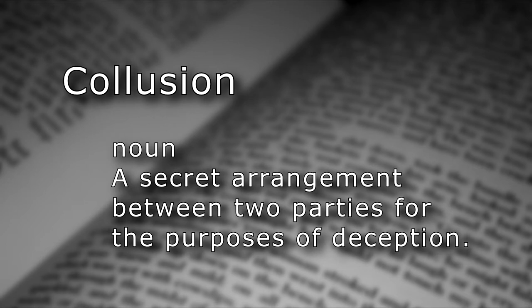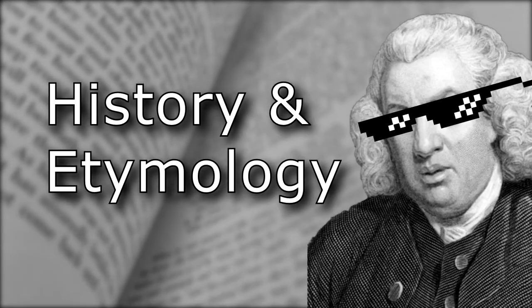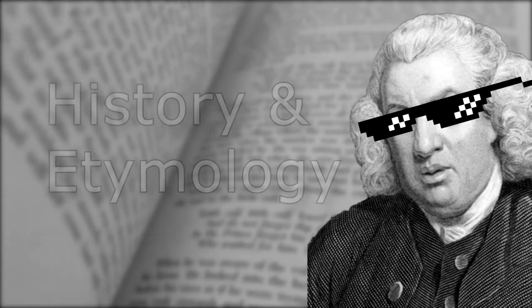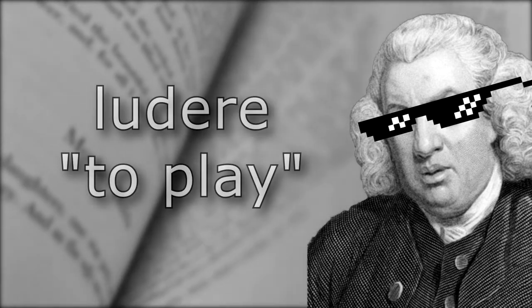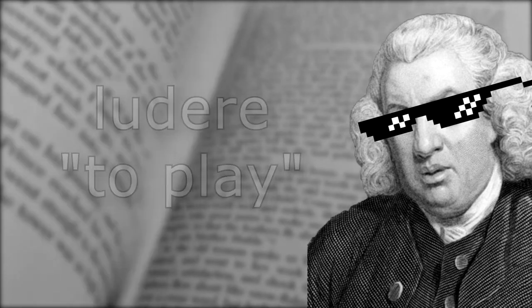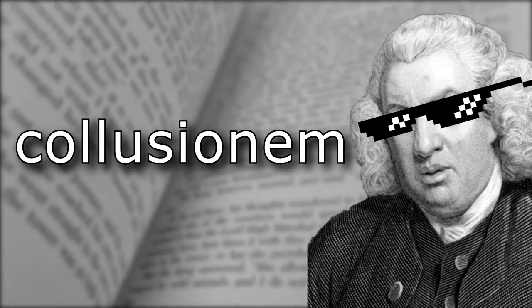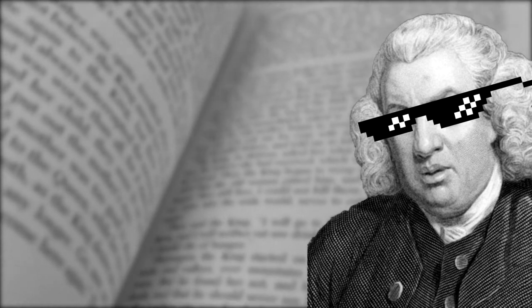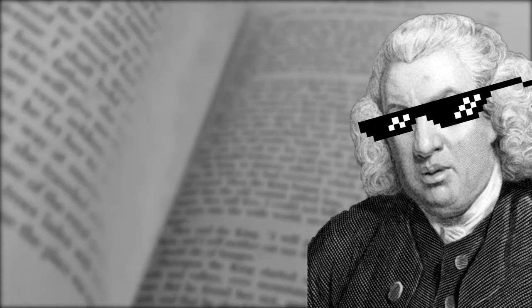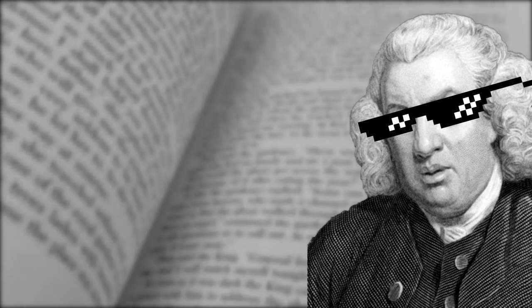Noun. The word collusion began its life innocently enough. It was a compound of two Latin words: com, meaning with or together, and ludere, meaning to play. The Latin word collusionem literally meant to play together, or into each other's hands. But it never appears to have actually been used that way, even on its journey through French and into English — it's always had the modern definition.